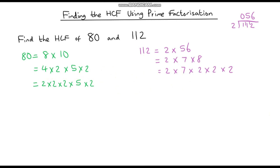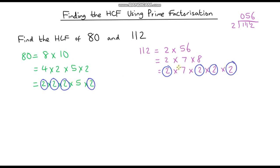Now we identify which prime factors 80 and 112 have in common. 80 has a 2 and so does 112; another 2 and another 2; another 2 and another 2 — so they share 2 times 2 times 2. 80 has 5 but 112 doesn't, and 112 has 7 but 80 doesn't. So the highest common factor is 2 times 2 times 2 times 2, which is 16.